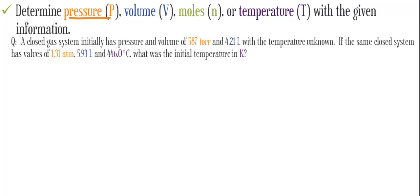A closed gas system initially has pressure and volume of 587 torr and 4.21 liters with the temperature unknown. If the same closed system has values of 1.31 atmospheres, 5.93 liters, and 446 degrees Celsius, what was the initial temperature in Kelvin?